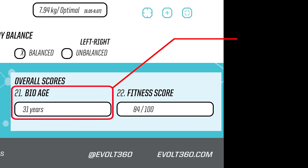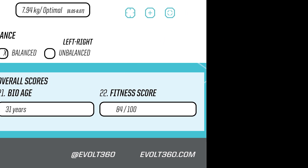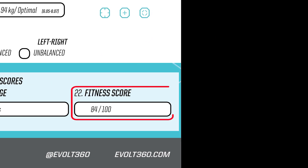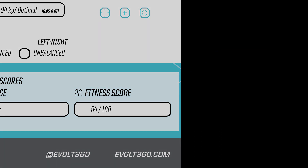The overall scores at the bottom provide you with your bio-age at number 21, which is a reflection of your internal health age as it relates to your body composition. The idea is to be at your physical age or younger. Number 22 is a total fitness score, which is one simple metric that balances the integrity of your lean body mass as opposed to total fat mass. The goal is to score from 70 and above to put you within a balanced healthy range. The idea is to increase this score every time you scan, which will immediately provide you with positive feedback that your progression is positive.